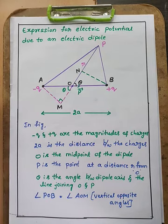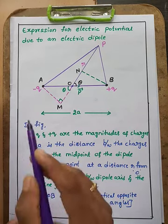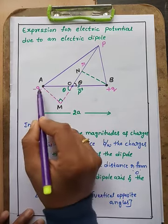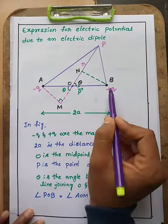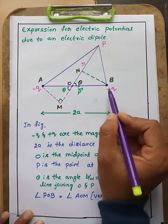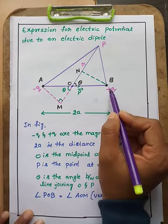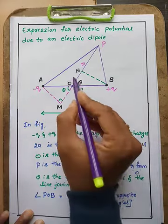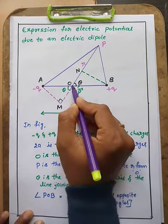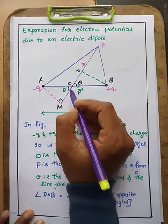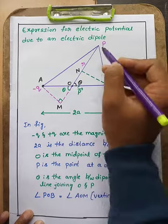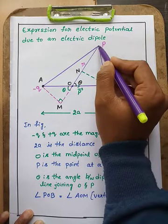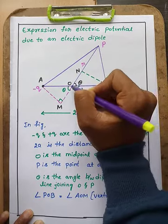For that we are considering the dipole. A dipole consists of two equivalent opposite charges — one minus Q charge and one plus Q charge — separated by a distance 2a. O is the center of the dipole. Here we are taking a point P perpendicular to the dipole.